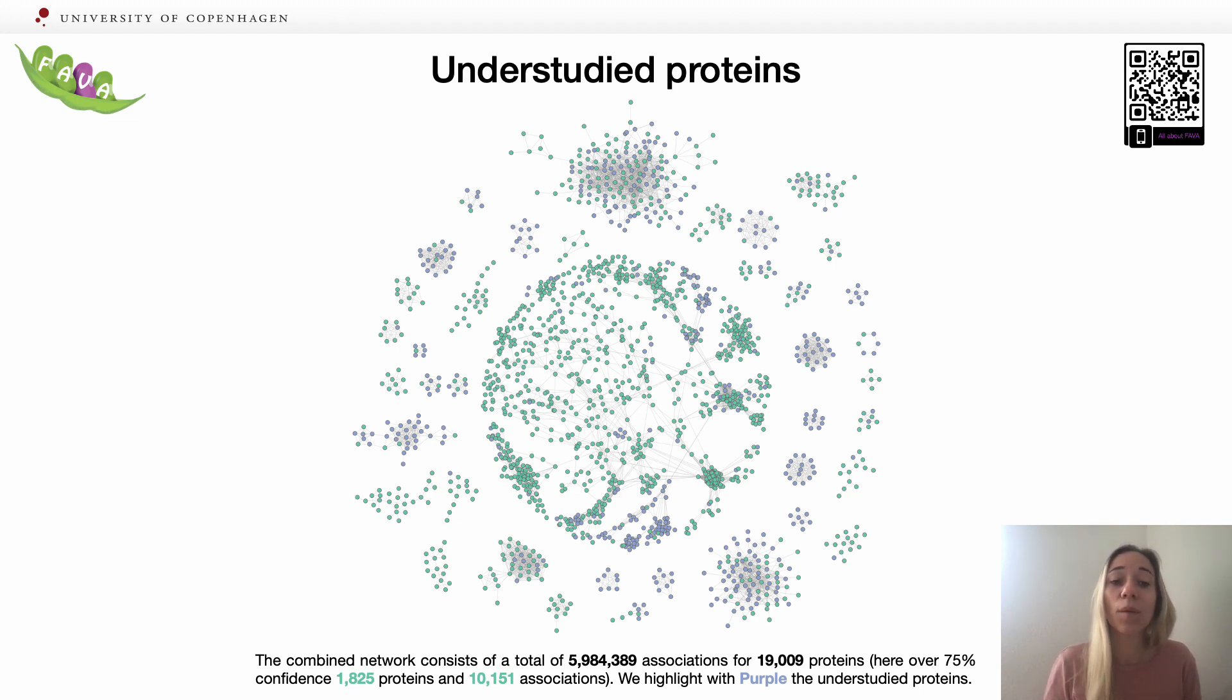You can find more information, download the network, or download the FAVA PyPI under this QR code on the right up corner that says all about FAVA.